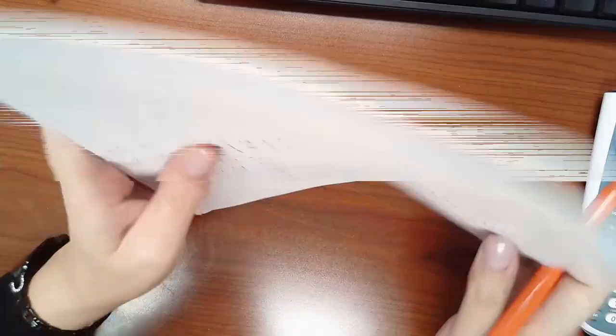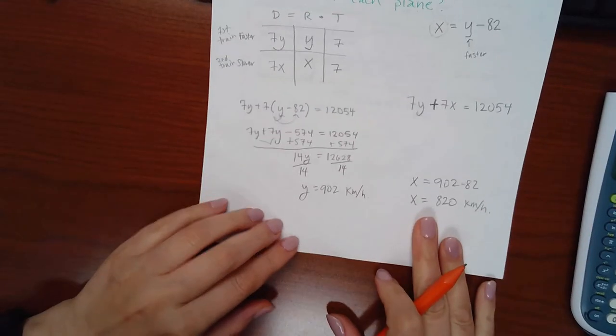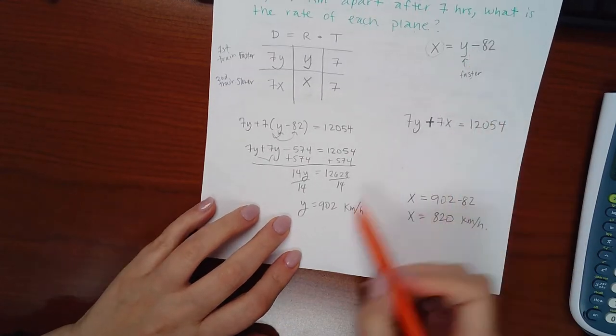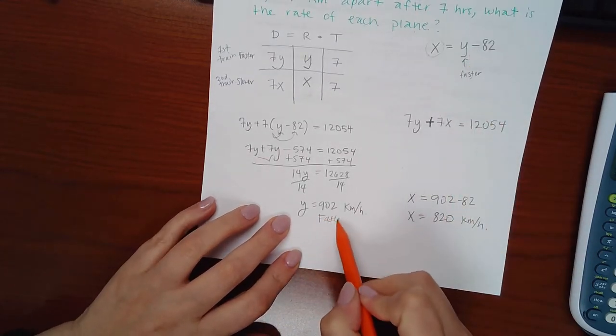And I get that x equals 820 kilometers per hour. So in the computer, when it asks you for which one's the faster and which one's the slower, you know which one. Remember, y is the faster. So this would be the faster plane.